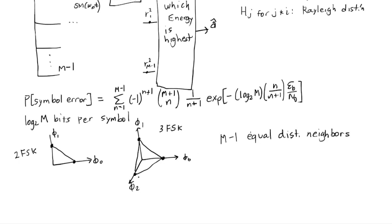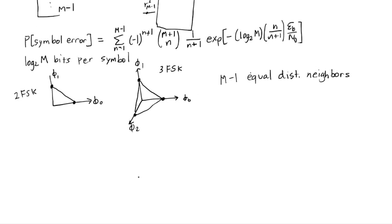So keep that in mind, because now we're going to calculate the probability of bit error. Here, I might be sending a 1 or a 0. For 3 FSK, I don't know.